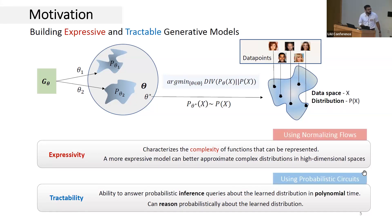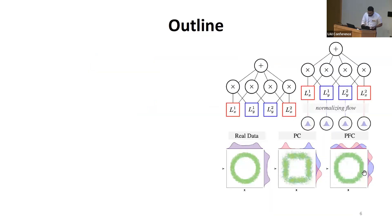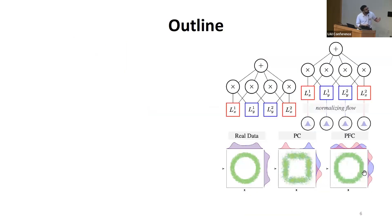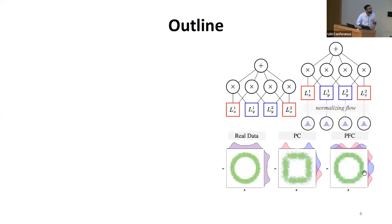In this work, we aim to bridge this gap by building models which are both expressive and tractable by combining design principles from both paradigms. More specifically, we combine normalizing flows with probabilistic circuits. We build hybrid models comprising probabilistic circuits with normalizing flows incorporated at the leaves.